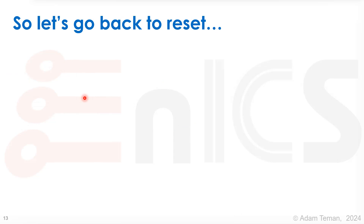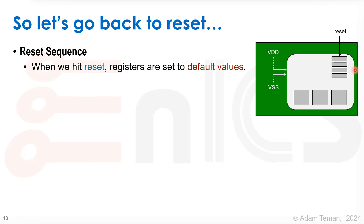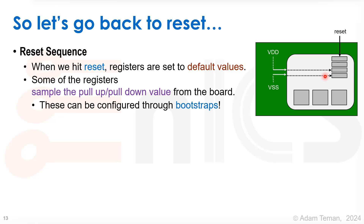Let's go back to our reset operation. We have a reset sequence. Here's our board and chip, with inputs that are either pulled up or pulled down. When we hit reset, the registers go to a default value, bringing them to the initial state of the machine. Some registers will sample the pull-up or pull-down values from the board, so we can bring them to a different reset value than what we had in the RTL. These can be configured through the bootstrap — by putting a resistor on the board, changing a switch, or changing a jumper.